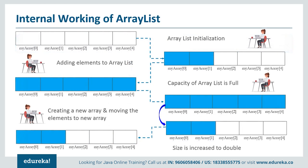Now let's move further and see the internal working of ArrayList. First, we create an empty array and then go on adding elements. Once the size of the array is full — that is, if the size of current elements is greater than the maximum size of the array — we have to increase the array size. But the size of an array cannot be increased dynamically. So what happens internally is a new array is created and the old array is copied to the new array, automatically doubling the size. So you can go on adding elements as required.